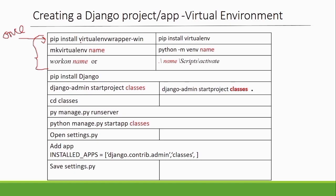The first thing is the commands for setting up your environment. You can follow either of two commands — one gives additional features, the other gives basic features. For whatever project you are doing in Django, the basic command is sufficient. After you have virtualwrapper, you create a virtual environment — either with this command if you're using the standard method, or this command if you installed virtualwrapper.